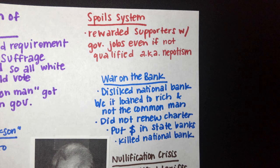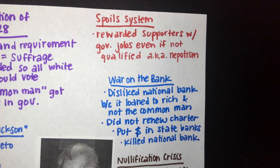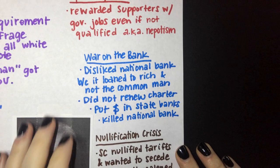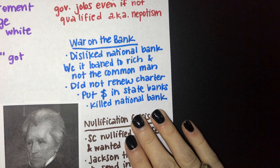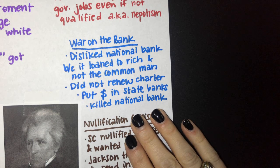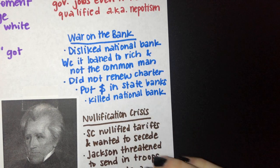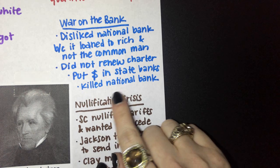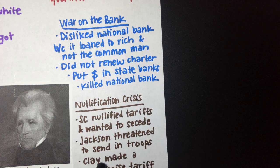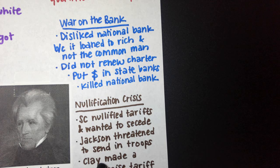Andrew Jackson is notorious for not following Supreme Court laws and using his veto power excessively. One of the things we talked about was the war on the bank. Jackson greatly disliked the National Bank, feeling it only gave loans to the wealthy and not enough to the common man. When the bank's charter — its permission slip — was up for renewal, Jackson decided not to renew it. He took all the federal money out of the National Bank and put it into state banks, ultimately killing it. This technically violated the Supreme Court case McCulloch v. Maryland, in which the Court in 1819 deemed the National Bank necessary and proper.